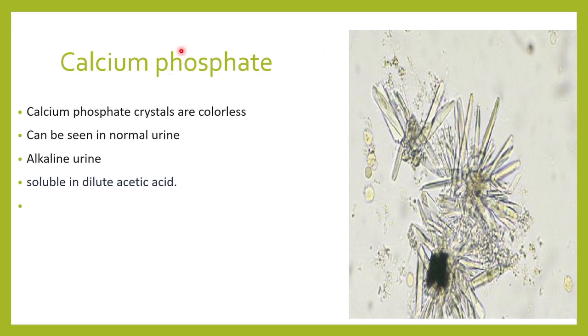Calcium phosphate crystals we usually see in alkaline pH, and when we add dilute acetic acid, these crystals are soluble.